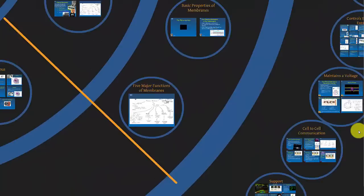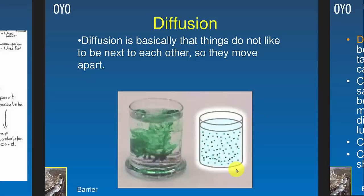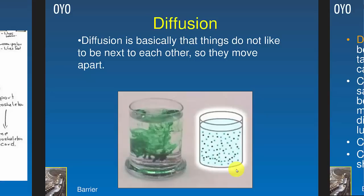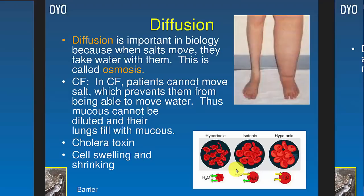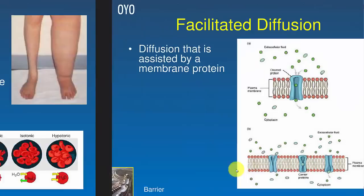The main topics for the barrier function of the membrane are diffusion and osmosis. Diffusion is the tendency of things to spread apart — dye in water spreads out, people spread around a classroom. Diffusion is important in biology: sodium diffuses and water follows. In cystic fibrosis, the CFTR protein moves chloride, then sodium follows, then water. Cholera toxin similarly dumps chloride into the gut and water follows. Cell swelling and shrinking are all issues related to diffusion.